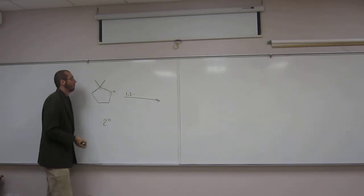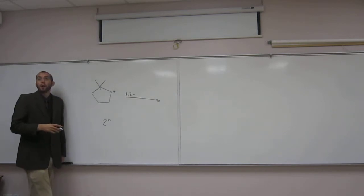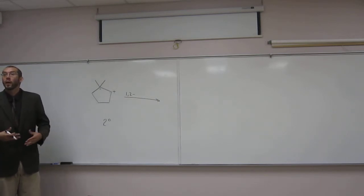So one carbon away. So we could move it from there, or we could move from there. If we move a hydrogen from there to there, we would get a positive charge there. That's a secondary carbocation, it's not going to go from a secondary to a secondary. That's not giving it more stability, so no reaction will occur.